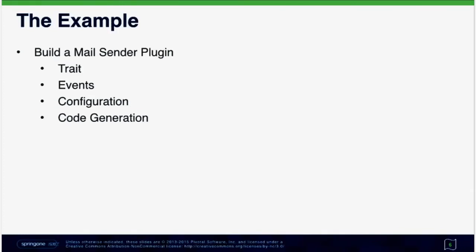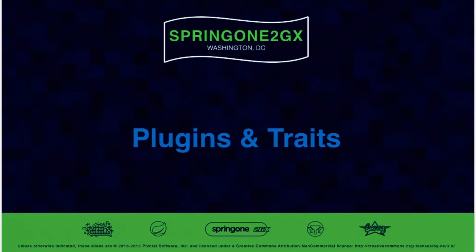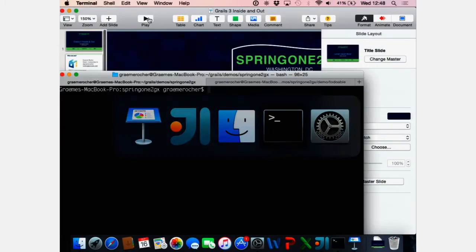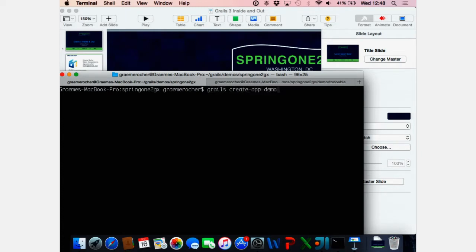We're going to build an example here — a mail sender. We're going to use traits, events, configuration, and code generation to build a plugin. For those who don't know what a trait is: a trait is essentially like a Groovy Java 8 interface with default implementations, but they have much better semantics in terms of composition in Groovy. It's a more robust version of Java 8 default methods, designed for Groovy — kind of like a mix-in.